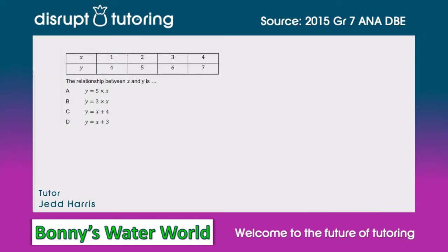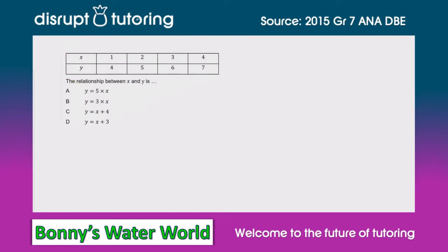Hey guys, it's Jed here from Disrupt Tutoring. Always so nice to be with you. I'm going to get straight into the question. The examiner has given us this table and we see that there is a row for x and a row for y, which basically means that we're looking at the relationship between x and y.